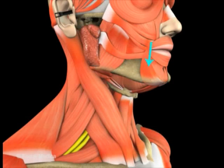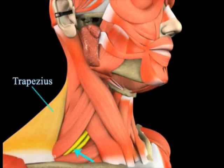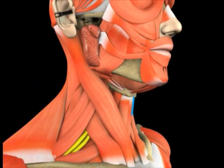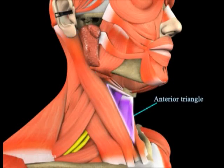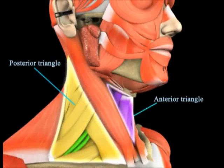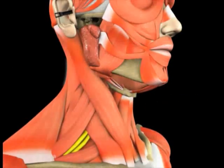The lateral view of the neck extends from the inferior border of the mandible to the clavicle. The trapezius is seen posteriorly while the anterior midline of the neck is the ventral edge of this view. The sternocleidomastoid runs obliquely through this region and splits it into an anterior and a posterior triangle. The posterior triangle is better seen in this view.